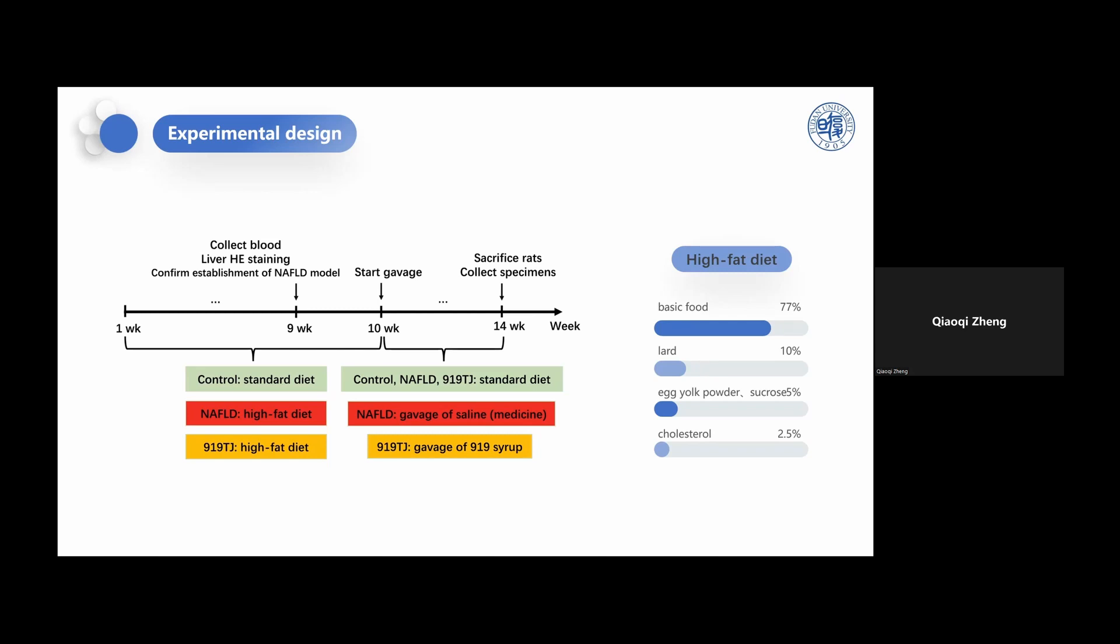First is the experimental design to establish the NAFLD model. In the first 9 weeks, the control group received a standard diet; the NAFLD and TJ groups received a high-fat diet. TJ is the 919 group. This is the component of the high-fat diet. We recorded their body weight and food intake twice a week and collected blood at week 9 by the tail vein. From week 10, the rats in the TJ group were orally administered 919 for four weeks, while those in the model group were administered the same volume of physiological saline.